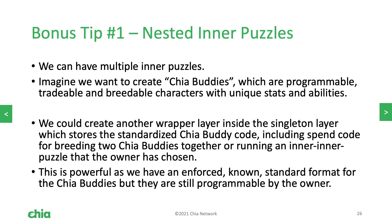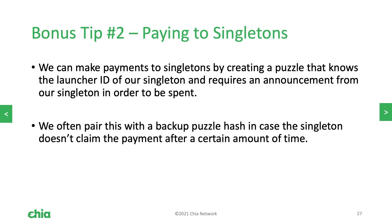To conclude, here are two short tips for writing singletons. The first tip is that you can have nested inner puzzles — it doesn't just have to be an outer layer and an inner layer; you can have as many layers as you want. For example, with Chia Buddies, you could have a standardized Chia Buddy layer that handles things like breeding, trading, and getting stats, with an inner-inner layer for the owner to control ownership. The second tip is that you can make payments to singletons — you just have to send the coin to a puzzle that can only be spent if it receives an announcement from the singleton currently owned by that launcher ID. This allows you to do things like create a payment offer to the owner of a specific Chia Buddy.